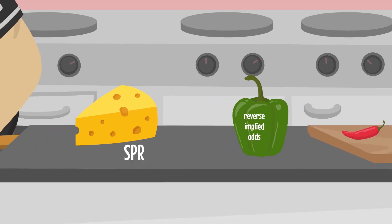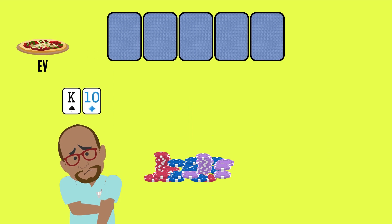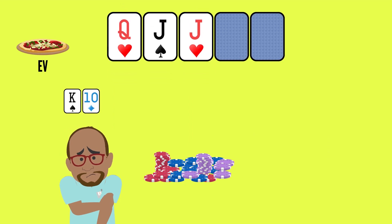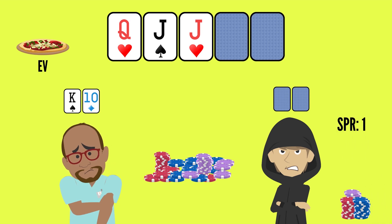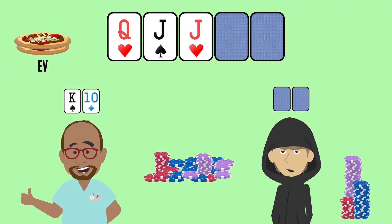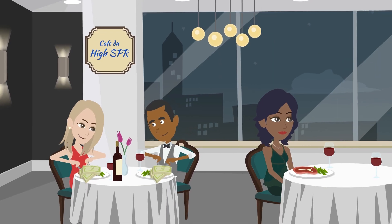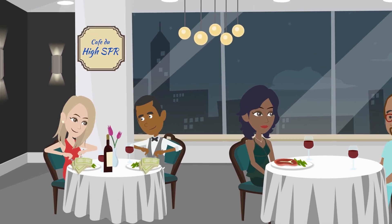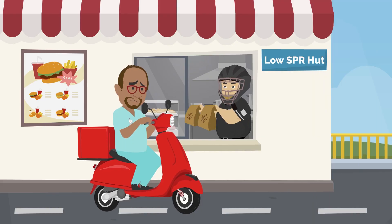Just like when calculating pot odds, it's important to remember that the SPR is already baked into your EV in a given hand. The EV of drawing to a straight draw on the flop is not going to be the same if your opponent is close to all-in — say with an SPR of 1 — as it would be if your opponent is still super deep with an SPR of over five. SPR directly affects our EV because it determines how much or how little can be wagered in the hand.